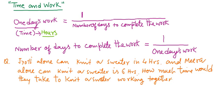How we will solve these problems? Here, two workers: one is Jyoti and second one is Mira. Jyoti alone can knit a sweater in four hours. So first of all, we will find Jyoti's one hour work.